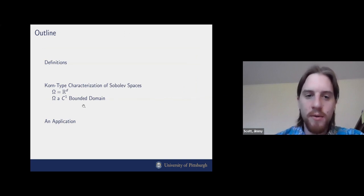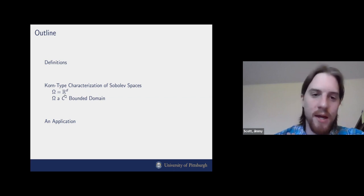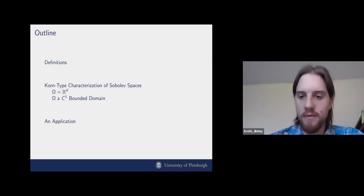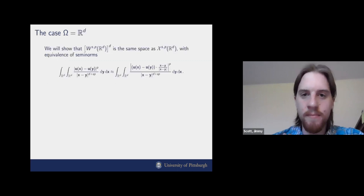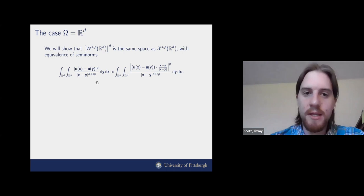The first case we'll consider is Ω equal to all of Euclidean space R^d, the second case will be a smooth bounded domain, and finally we'll talk about an application. In the case that Ω is all of Euclidean space, we can show that these two spaces are actually the same — the Gagliardo semi-norm and the projected difference quotient semi-norm are equivalent.